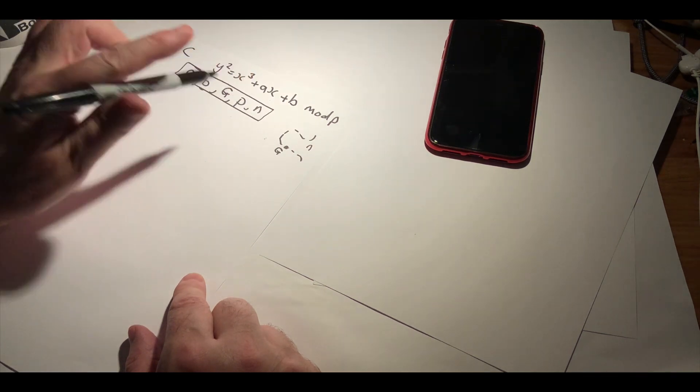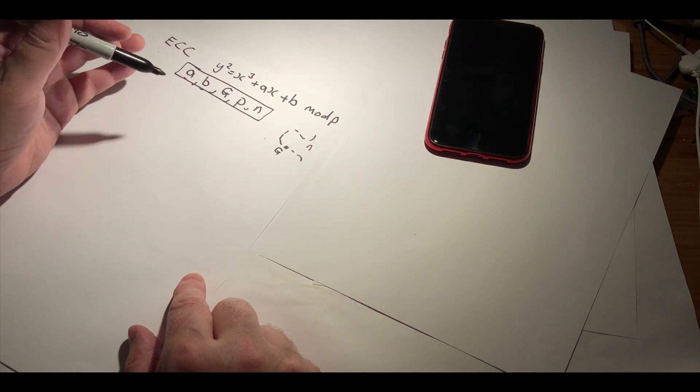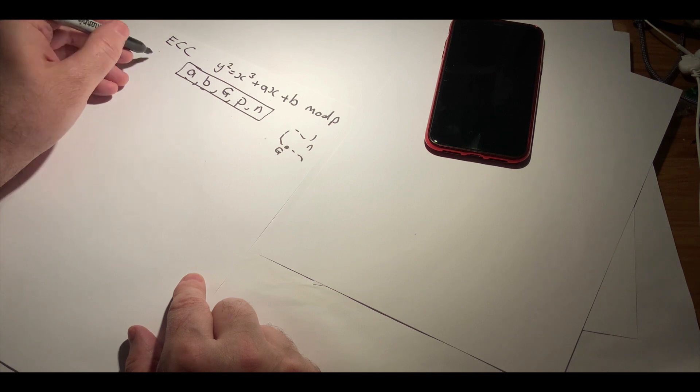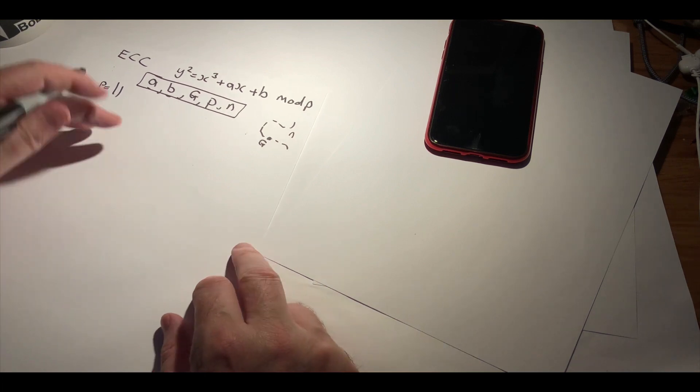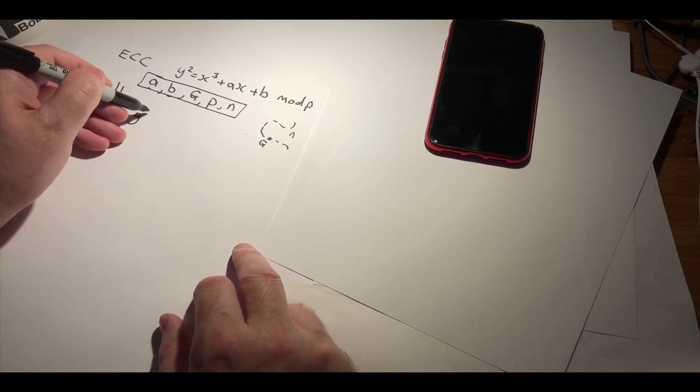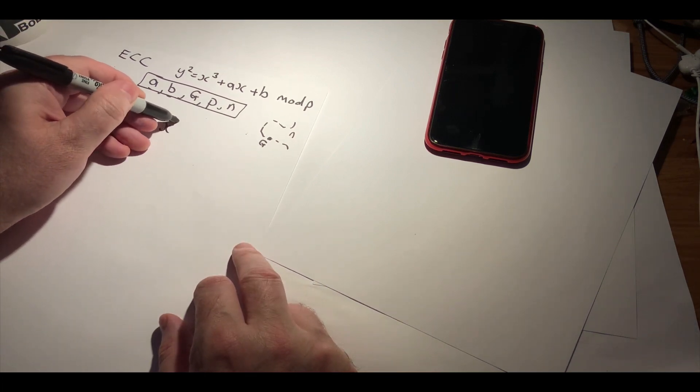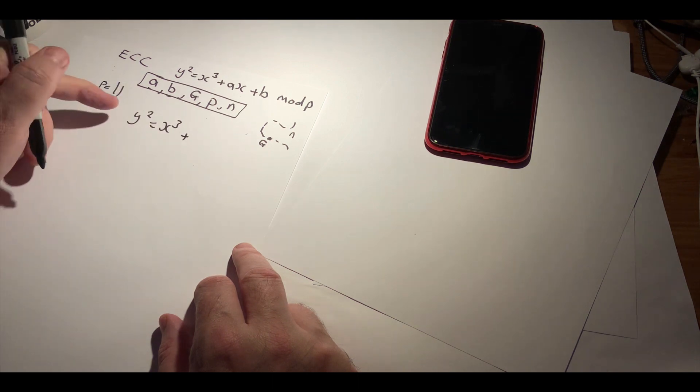So let's see if we can find the points on the elliptic curve. Let's take a prime number of 11 and work out where our points are.